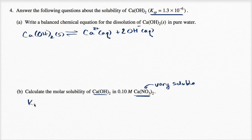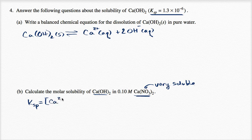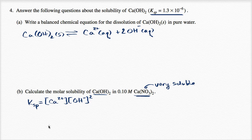The solubility product is equal to the product of the concentrations of the two things that actually get dissolved: calcium ions and hydroxide ions. Since you have two moles of hydroxide for every mole of calcium, we square the hydroxide concentration just like that.